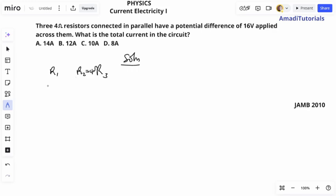All of them are 4 ohms. The potential difference, the voltage, is 16 volts. What is the total current drawn?